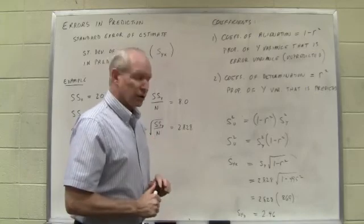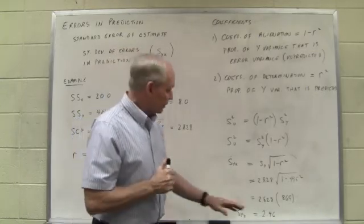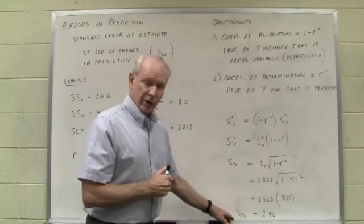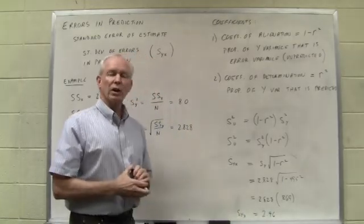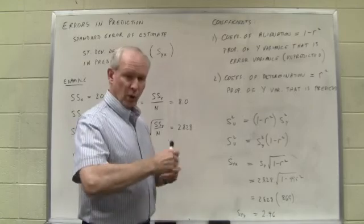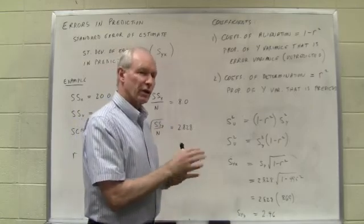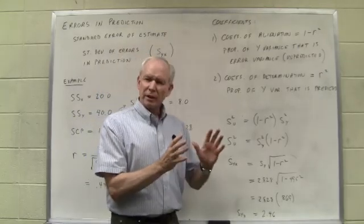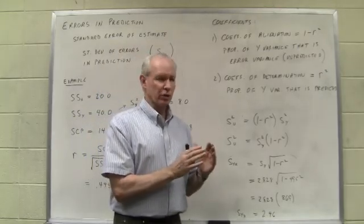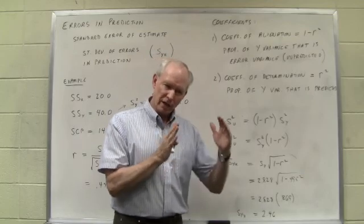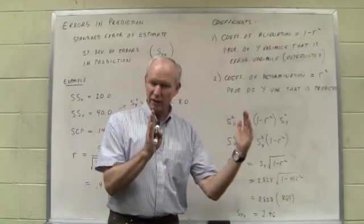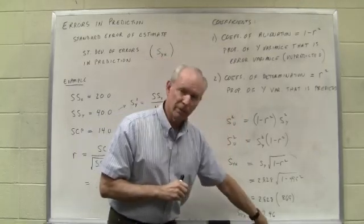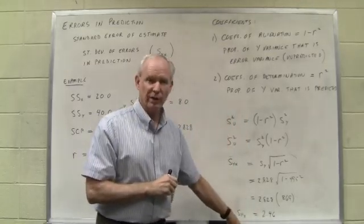We're not quite far enough along to talk about this next topic, but let me tell you what we're going to use this for in a short time. The standard error of estimate is going to be used to create something called confidence intervals. So we will make a predicted y value based on knowledge of an x value, and then we'll be able to say something like: we're 95% sure that the actual y value will be between this and this number — we'll provide this range. That range is going to be largely determined by the size of the standard error of estimate.